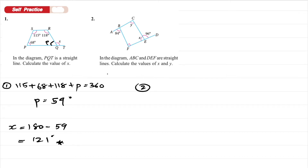Number two: AVCDEF are straight lines. Calculate the value of x and y. If you see the right-angle symbol, that means 90 degrees. To find x, since it is supplementary to the exterior angle: x = 180 − 96 = 84 degrees.